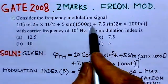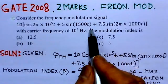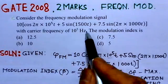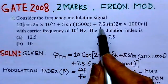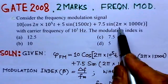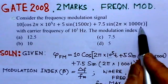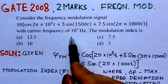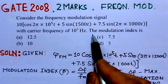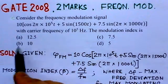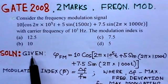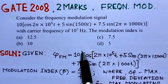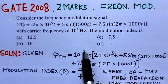Consider the frequency modulation signal: 10 cos(2π × 10⁵t + 5 sin(1500t) + 7.5 sin(2π × 1000t)), with carrier frequency of 10⁵ Hz. The modulation index is to be found from the four given options.